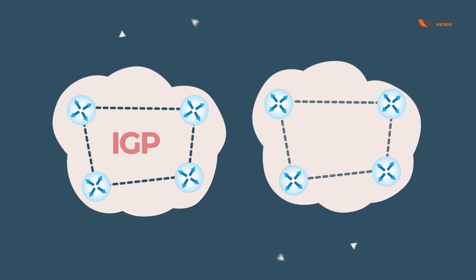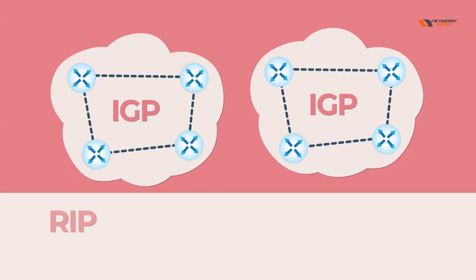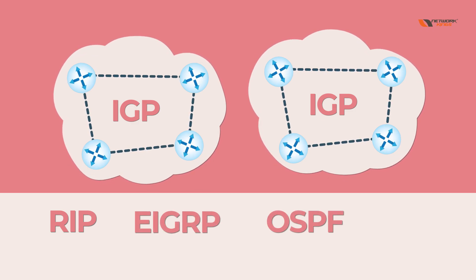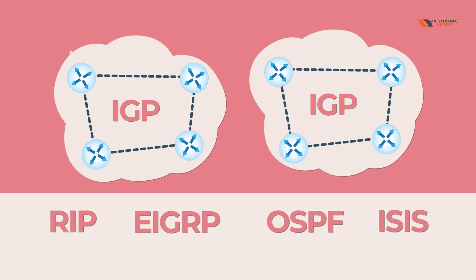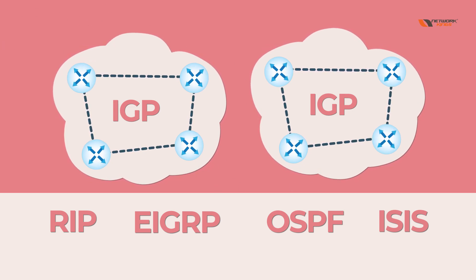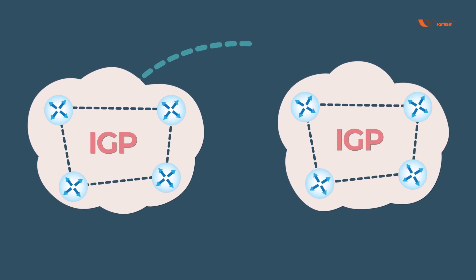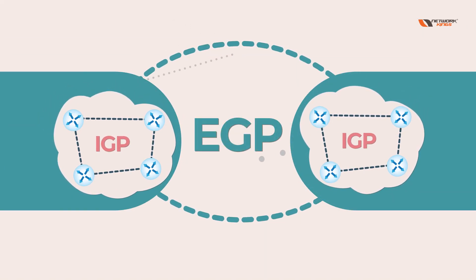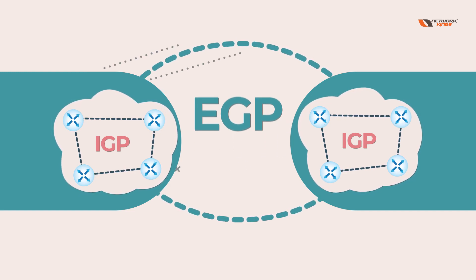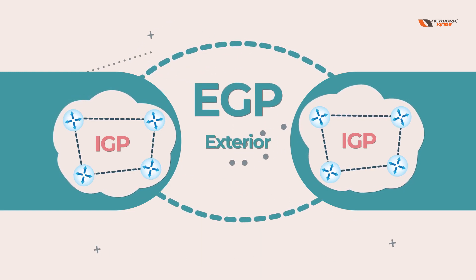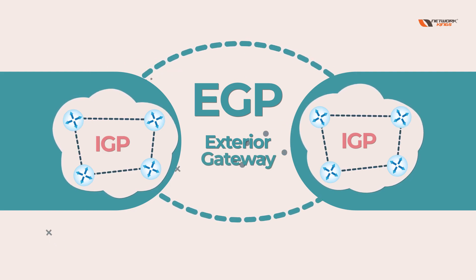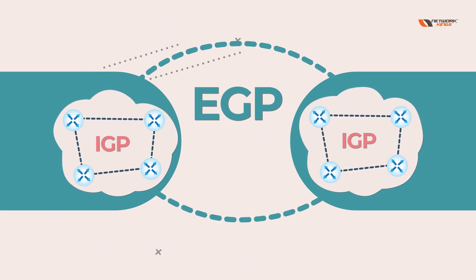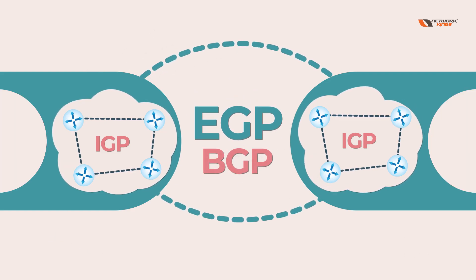Examples of IGP protocols are: EIGRP, OSPF, and ISIS — these are all Interior Gateway Protocols. But whenever we connect from one company to another company, that is called EGP — Exterior Gateway Protocol.